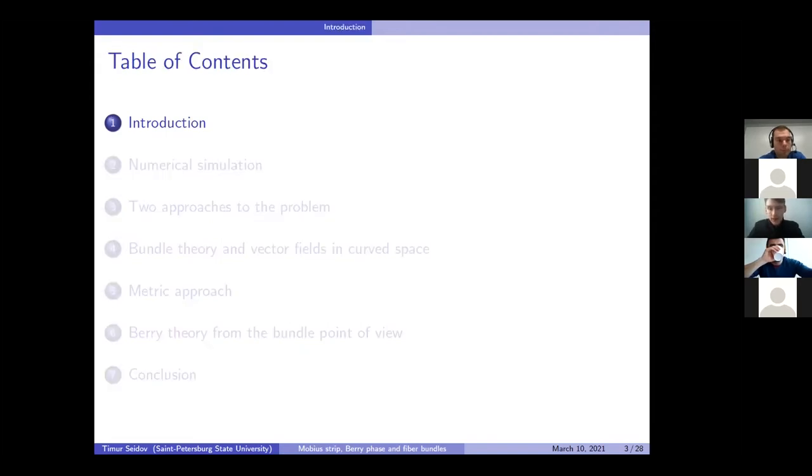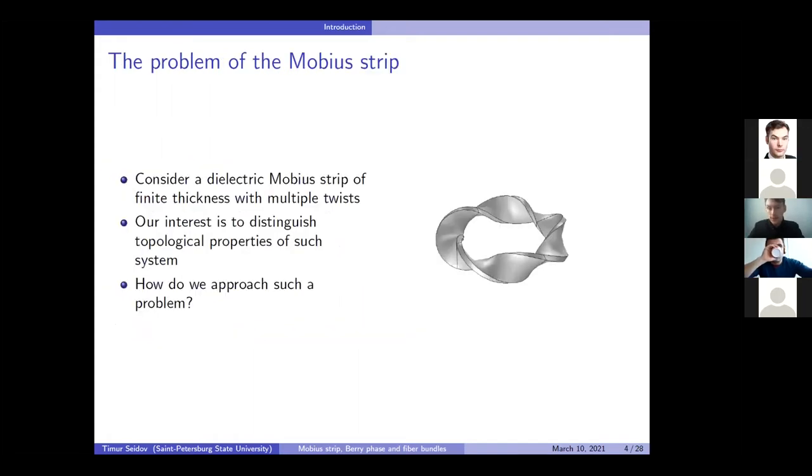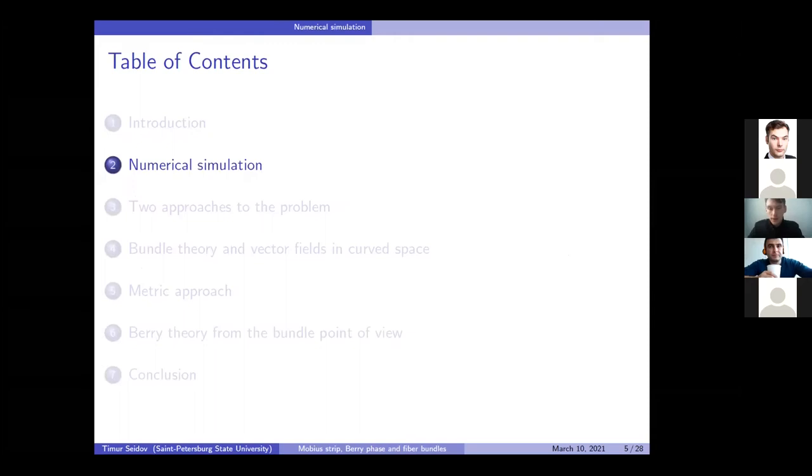So we are considering the problem of the fields on the dielectric Möbius strip with a different number of twists and finite thickness. In the picture on the right, you can see a five-twist Möbius strip. And our task is to understand how to consider precisely the topological properties of a given system.